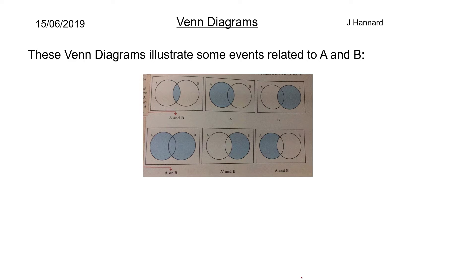So these Venn diagrams illustrate some events related to A and B. There was a nice little diagram in the book so I just took a picture of that and put that into the PowerPoint. So we can see A and B is that intersection we talked about before. Event A happening is this big circle here. Event B happening is this big circle here.